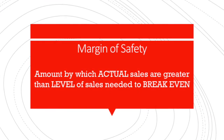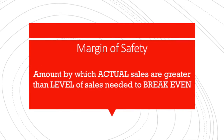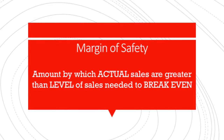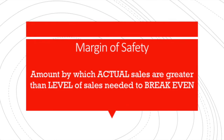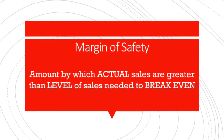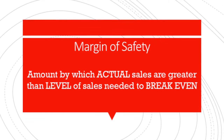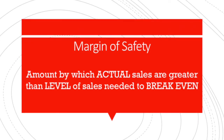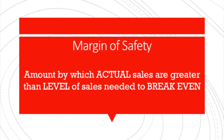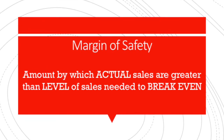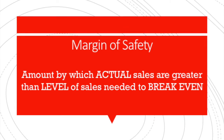Break-even analysis also allows owners to calculate the margin of safety — the amount by which the actual sales are greater than the level of sales or output needed to break even. So if we need to sell 500 sandwiches a week to break even and we sell 600, that means we have a margin of safety of 100 units or 100 sandwiches.